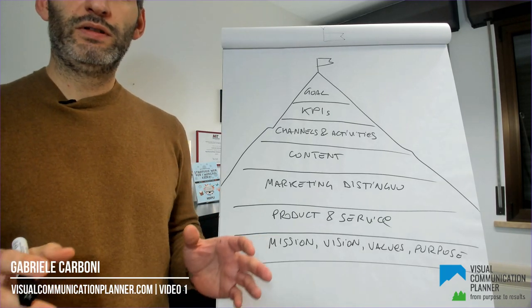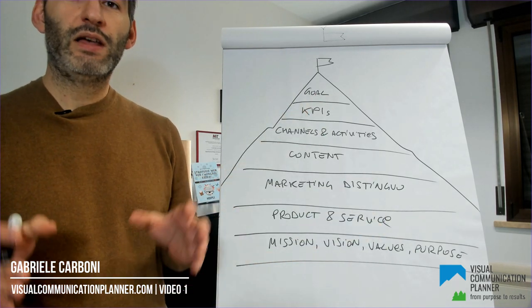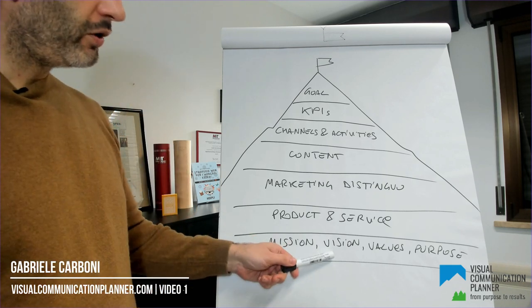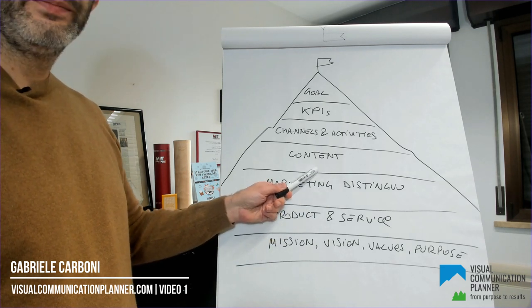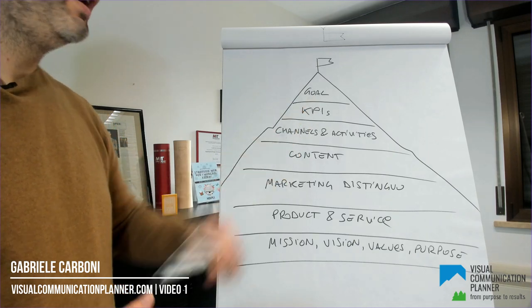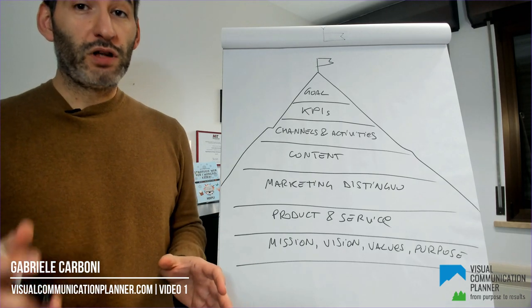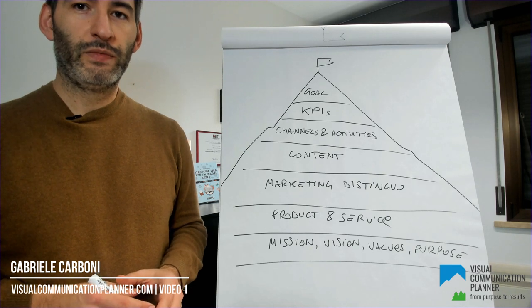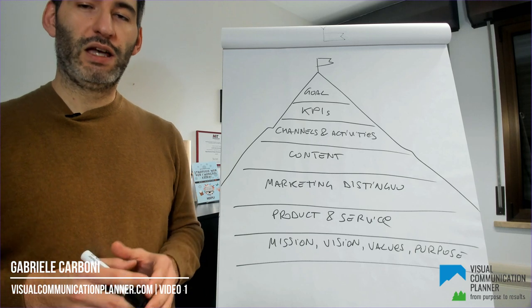Now you can climb your mountain all the way from purpose to results. Once you have set your goal, following this path will be easy: who you are, what you do, why people buy from you, what to tell, where and how to communicate, how to measure — and you finally are on the summit. Keep in mind that each element is related to others, and you need to have the whole strategy in mind even when you focus on defining each element.